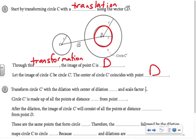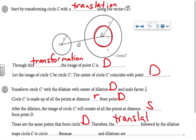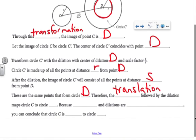If we transform circle C prime with the dilation with center of dilation D and a scale factor of S over R, then circle C prime is made up of all the points at distance R from point D. After the dilation, the image of circle C will consist of all the points at distance S from point D. These are the same points that form circle D. Therefore the translation followed by the dilation maps circle C to circle D.